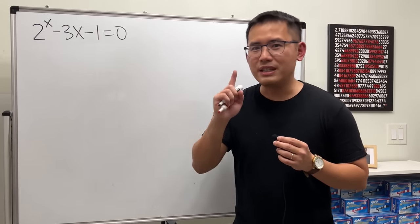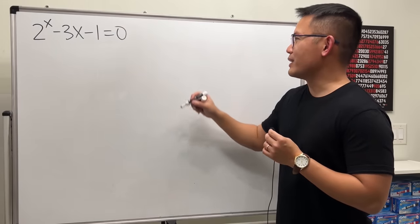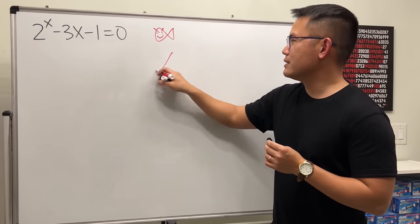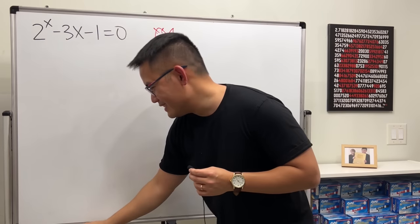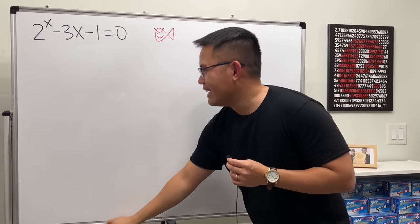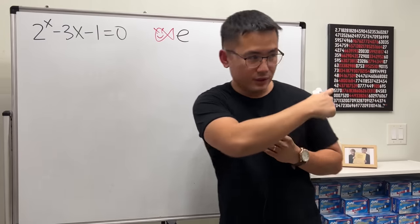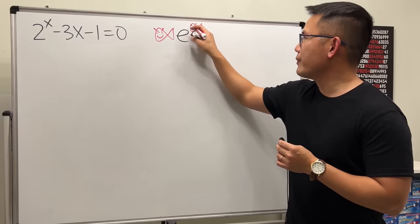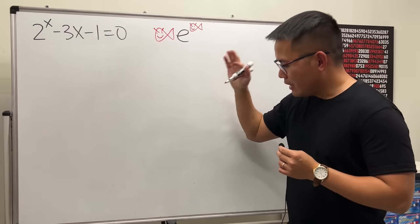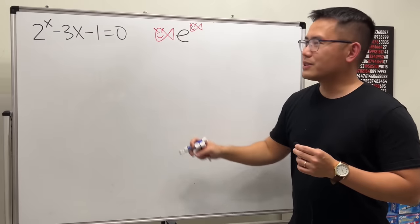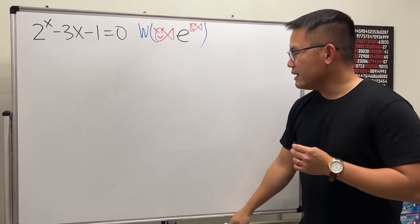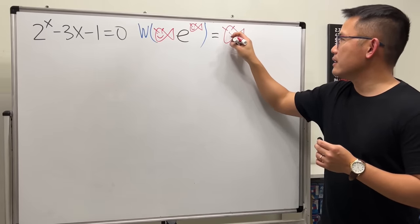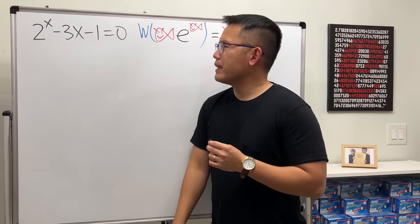We'll use the Lambert W function. Let me remind you what it is. First, we need to have a 'fish' — I call this the alpha fish. Then we want the number e, and we also want an exponent that is the same fish. Once you have that setup, you take the Lambert W function and it gives you just the fish back. That's the idea.